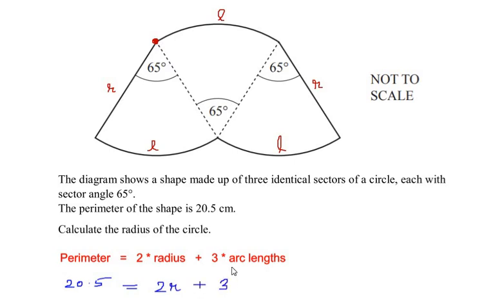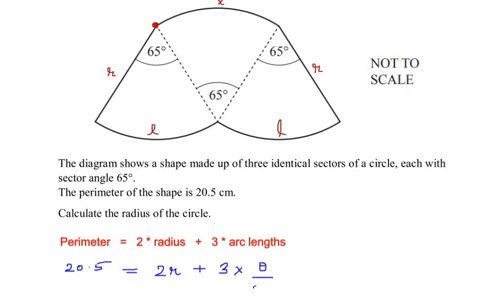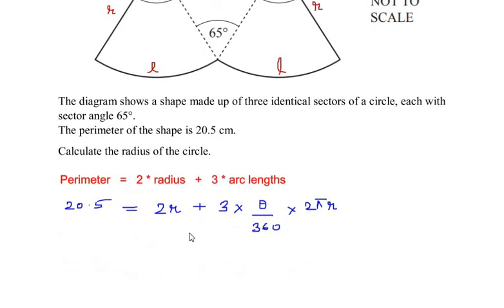arc length. Let us write down the formula of arc length. It is given as the central angle theta over 360 degrees times two pi r, two pi radius. So let us simplify this further and substitute the values.